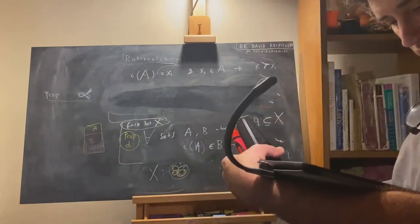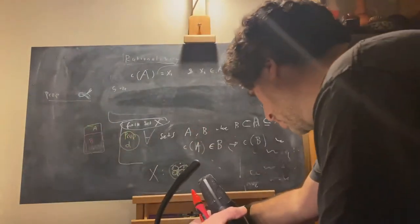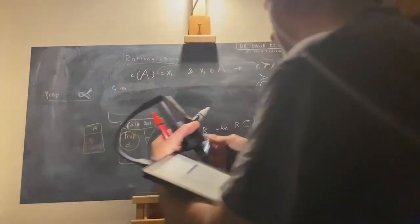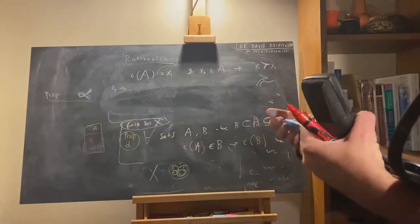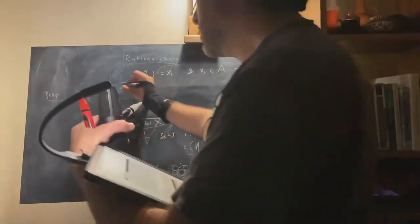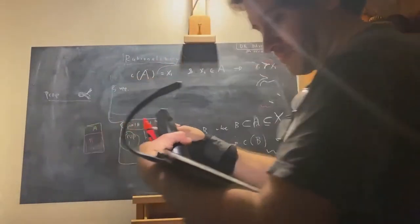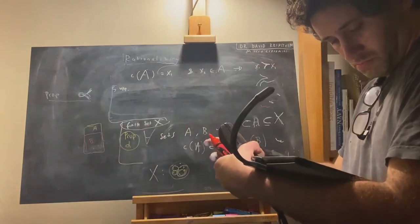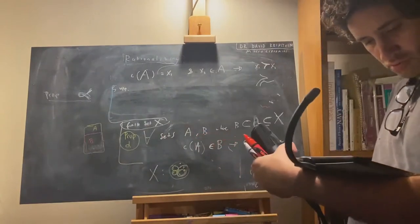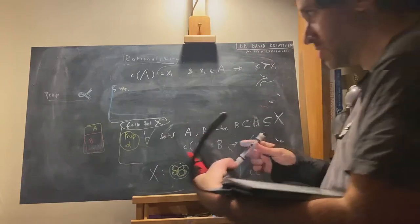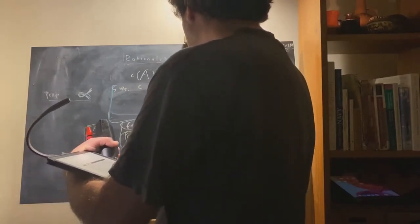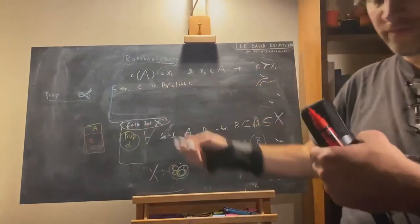Let's see what's going on. Suppose — I'll put assumptions in blue as a convention — suppose C is a rationalizable choice function. Does it have to follow Property Alpha?